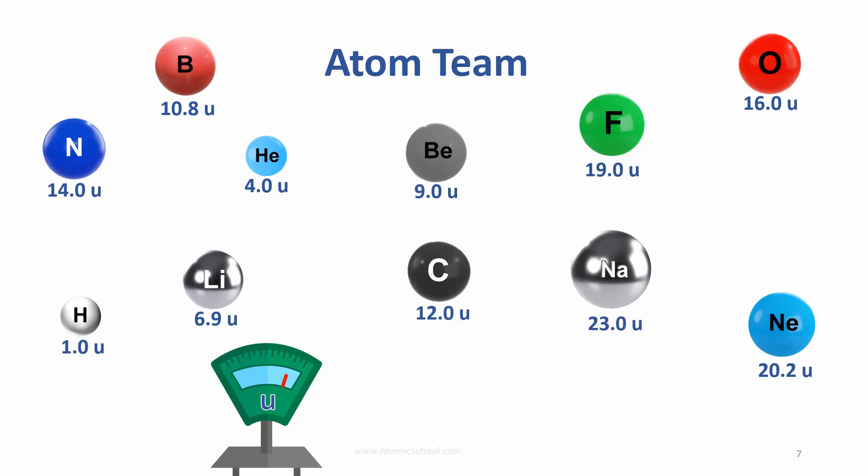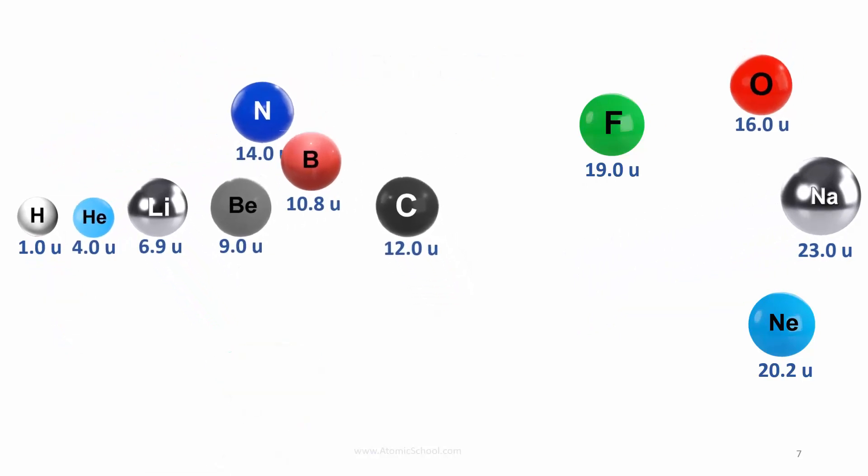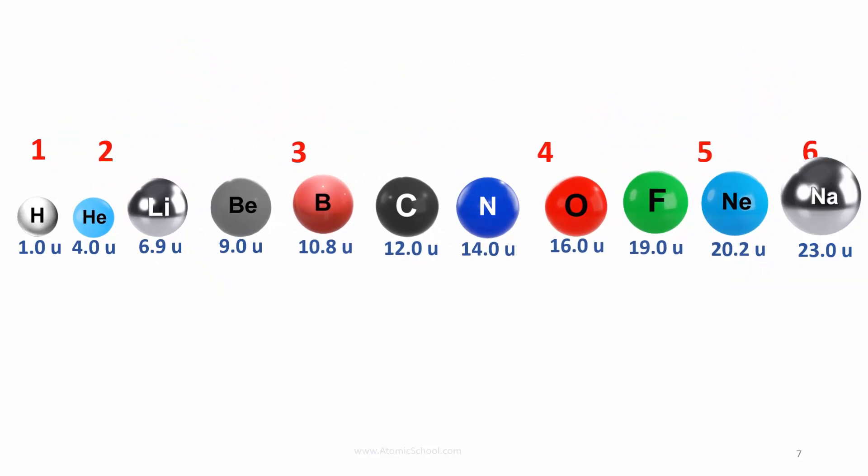We can now line up the atoms in order of their masses and put their place positions in too. Which will take first place and which will take last place. Let's do it. Hydrogen is first, obviously. And sodium is last here. Now we have two rows of numbers. Each atom's mass on the bottom and place number on the top. You know an atom's place number is called its atomic number, and its actual mass is called its atomic mass. Not surprisingly.